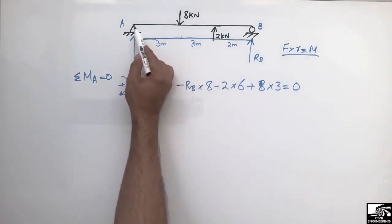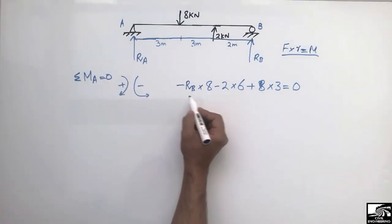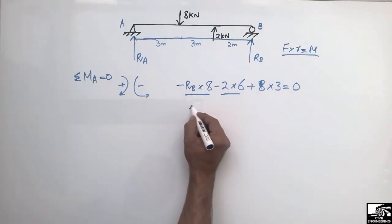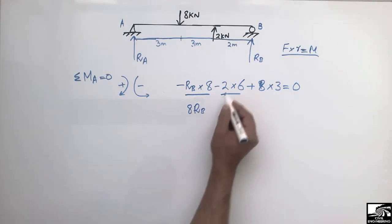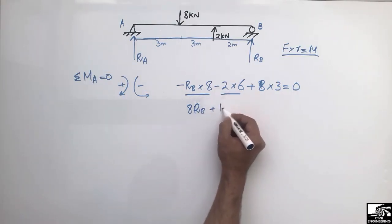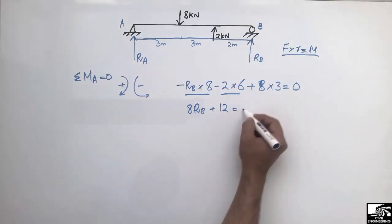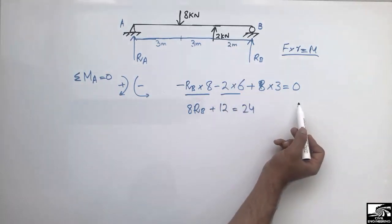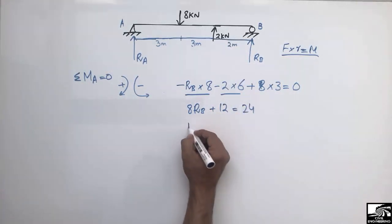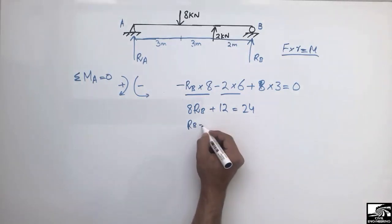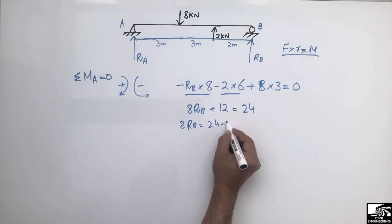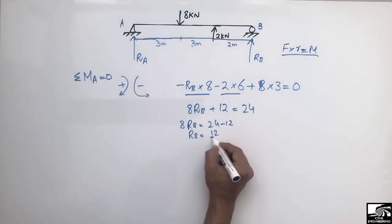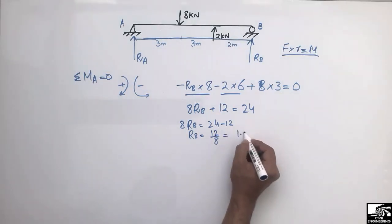Moving the negative terms to the other side of the equation, we get: 8·RB plus 2×6 equals 8×3, which gives 8·RB plus 12 equals 24. Therefore RB equals 24 minus 12, divided by 8, which comes out to be 1.5 kN.